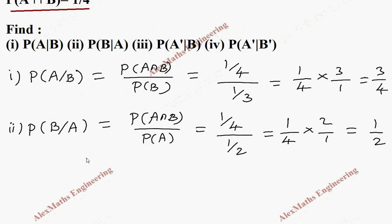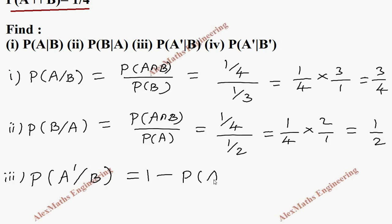In the third subdivision, they want P(A'|B), which can be written as 1 − P(A|B) = 1 − 3/4 = 1/4.